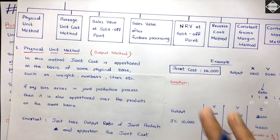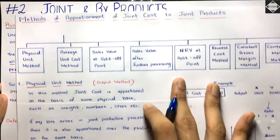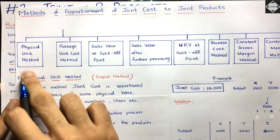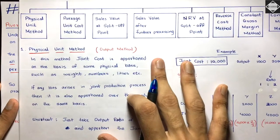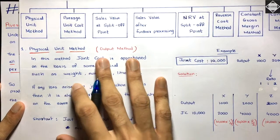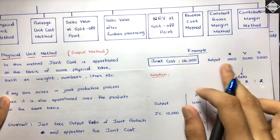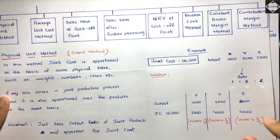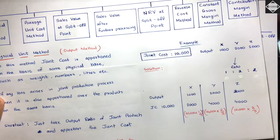We saw the different methods to apportion joint cost to joint products. We started with the first method — the Physical Unit Method — and solved a practical problem on it. In the Physical Unit Method, all we had to do was take the output ratio and apportion the joint cost in that ratio. Apportionment of joint cost is done to the joint products.